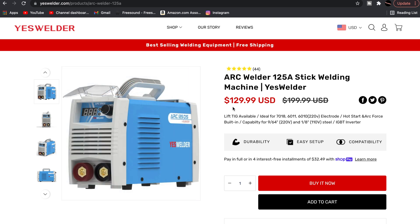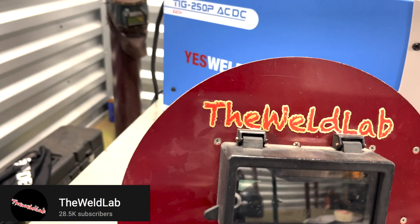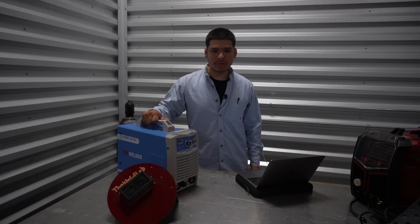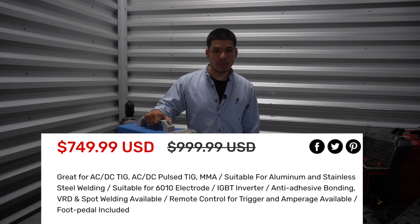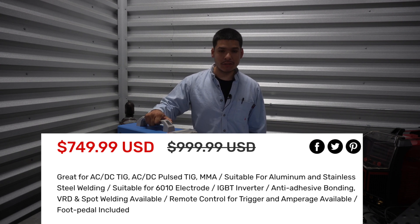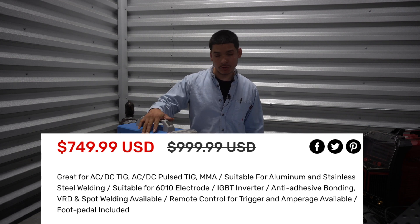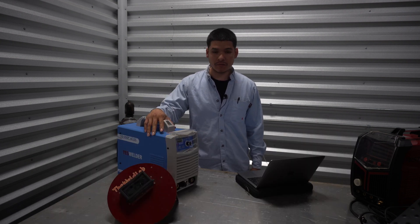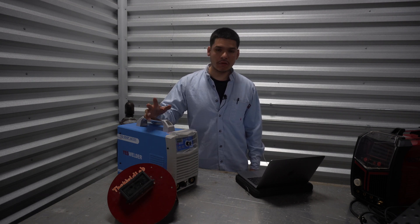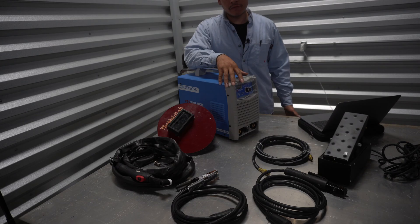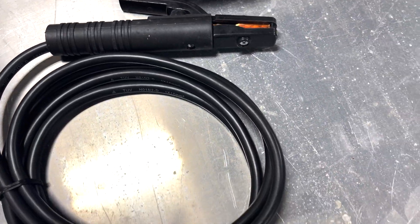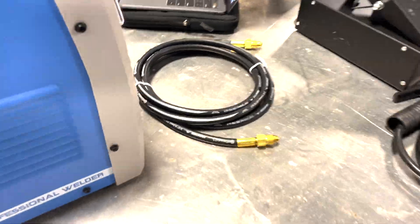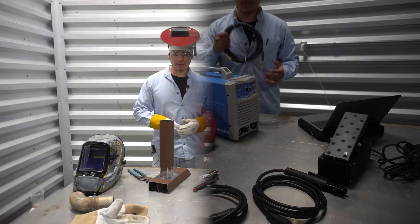I have a separate YouTube channel called The Weld Lab and have done other reviews on YesWelder machines. Now let's talk about some features - it has 58 reviews and five stars on their website. Great for AC/DC TIG, AC/DC pulse MIG, MMA, suitable for aluminum and stainless steel welding, suitable for 6010. A lot of machines can't run 6010 so I really like that they give it that feature. Remote control trigger and amperage control, a foot pedal, and it also comes with a three-year warranty. When you buy this machine it comes with accessories: your ground, a stinger, a stick welding stinger, a TIG rig, and the argon hose that you're gonna need whenever you run TIG or aluminum.